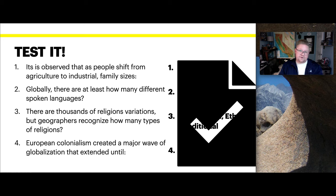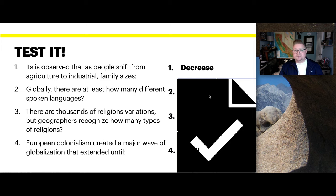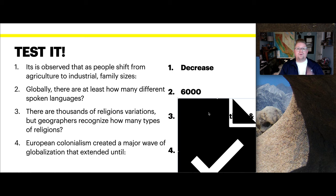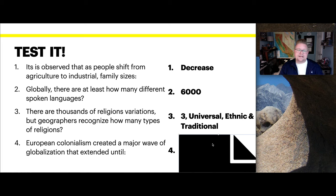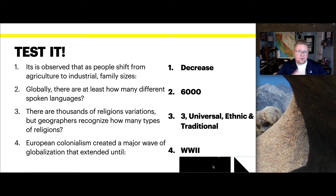The answers: as people shift from agriculture to industrial, family sizes decrease. Globally, there are over 6,000 actively spoken languages. Geographers recognize three types of religions: universal, ethnic, and traditional. And European colonialism's major wave of globalization didn't come to an end until the end of World War II. Welcome to this course — I hope you find the rest of the videos as exciting as this one. Let me know if you need anything.